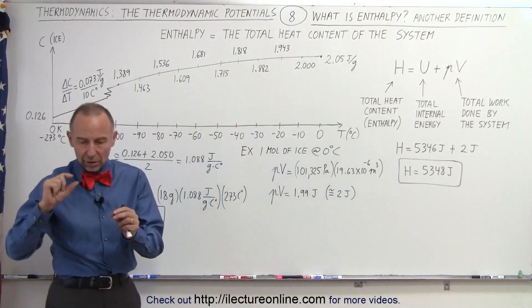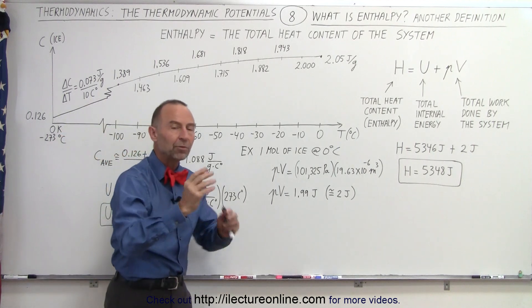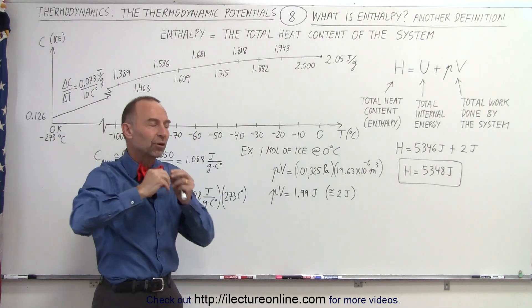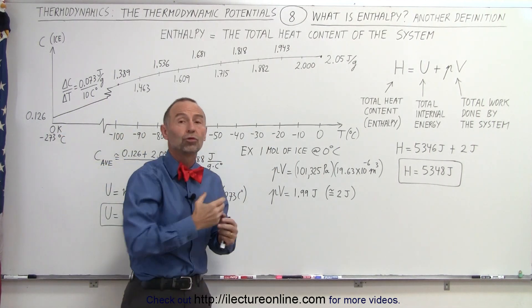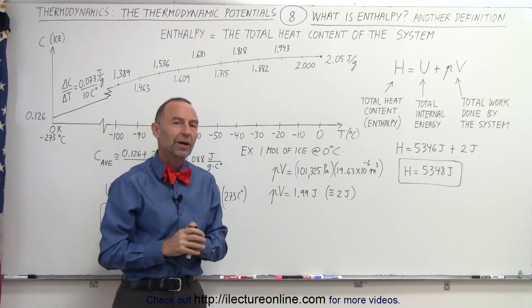In other words, to take a little cube of ice of 18 grams and place it in the atmosphere, you have to push away the atmosphere which requires about two joules of work to make room for that cube of ice.